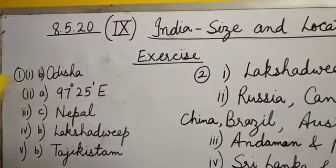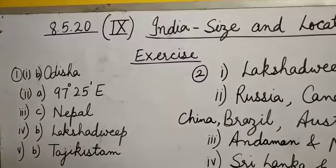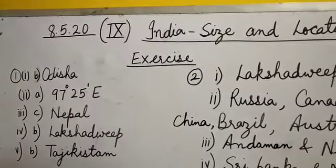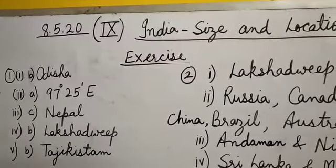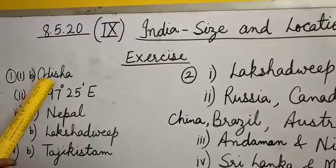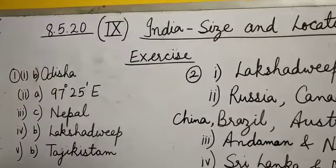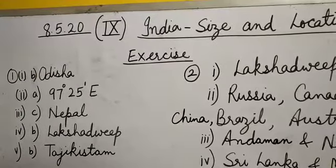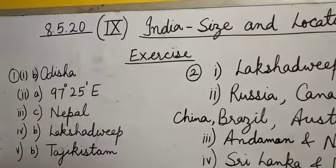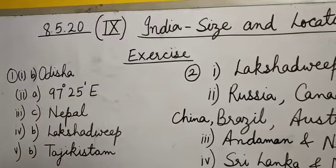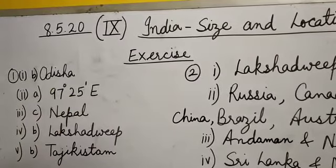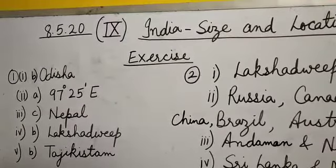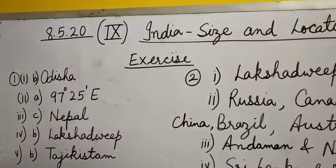Exercise number one is multiple choice questions. The first question: The Tropic of Cancer does not pass through — the answer is Odisha. Second: The easternmost longitude of India is 97 degrees 25 minutes east. Question number three: Uttarakhand, Uttar Pradesh, Bihar, West Bengal and Sikkim have common frontiers with — the answer is C, Nepal.